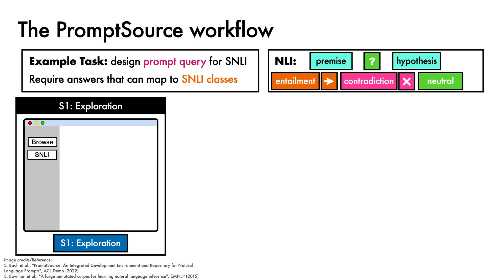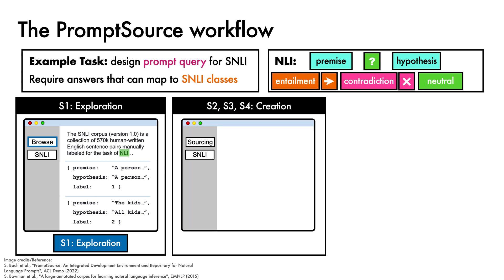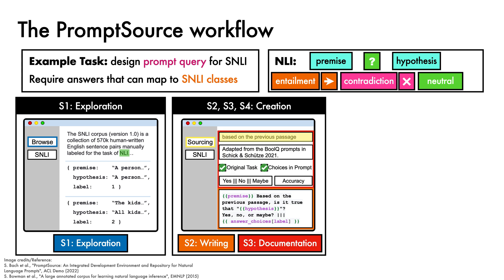The first stage in the workflow is Exploration. The prompt developer examines the SNLI dataset in the Browse view, where they can look at some metadata that tells them the task is natural language inference, and explore examples from the dataset. Stages 2, 3, and 4 employ the Sourcing view. Stage 2 involves writing the prompt itself in the Jinja2 templating language. Stage 3 involves writing documentation to give the prompt a name, explain where it came from, and communicate whether the prompt is intended for the original task of the dataset, and whether the choices for valid answers are included in the prompt itself, as well as appropriate metrics for evaluating the intended task. In stage 4, the prompt author can iterate over these steps to create additional variations of the prompt if desired.